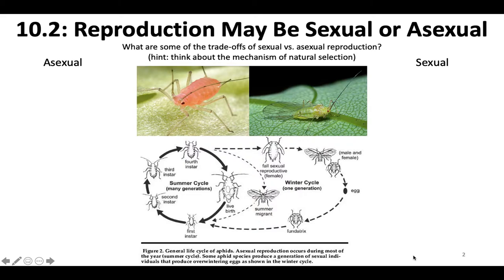First I want you to think about what are some of the trade-offs, benefits, or costs of sexual versus asexual reproduction. Asexual reproduction would be things like organisms that bud colonially, like hydroids or that invasive sea anemone, or organisms like aphids. Some aphid species in their summer cycles have an asexual phase where they produce offspring from unfertilized eggs. And then there's sexual reproduction — the fertilization of an egg with sperm to form a new individual. Some aphid species have both an asexual and a sexual cycle depending on their life history.